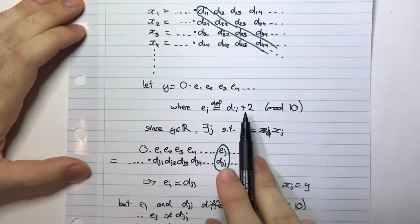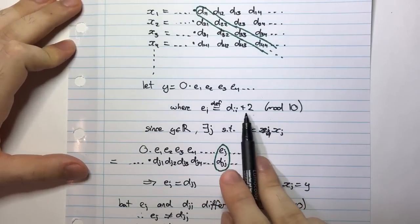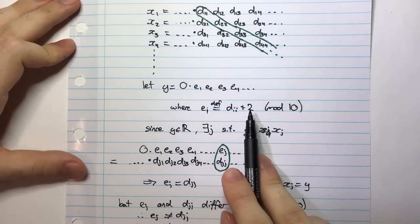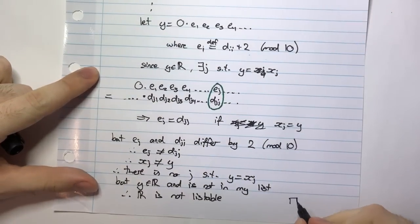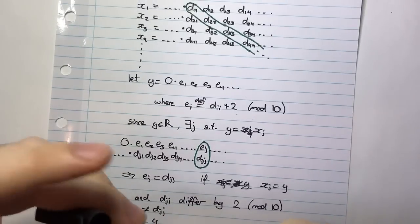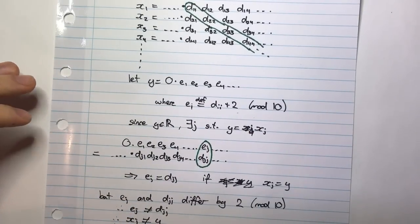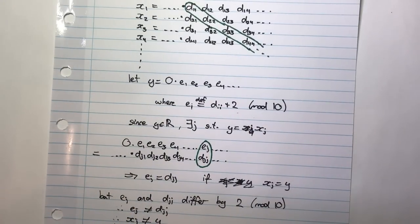Now I said something before where I said that it's very important that I chose this to be plus 2. And why is that the case? So firstly, let me just say that we've completed our proof. Why is this the case that this plus 2 is important?